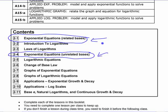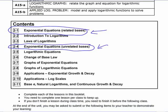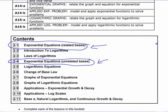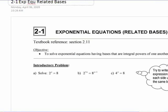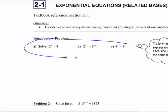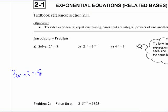An exponential equation - what would your guess be as to what that is? It's not a trick question. It's called an exponential equation because it has an exponent. But the key is that the variable is the exponent. You could make an equation that says 3x plus 2 equals 5 to the 7th - it has an exponent, but that's not an exponential equation because the variable is not the exponent.